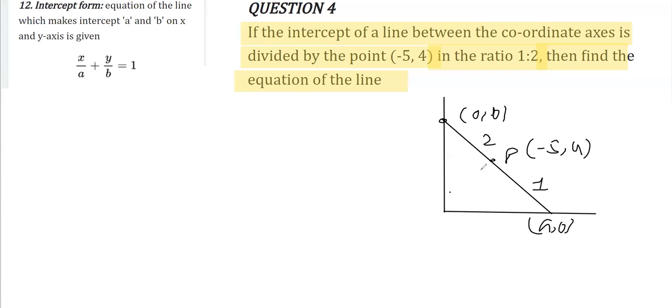For that we need the value of a and b, so we'll use the section formula: x = (m1·x2 + m2·x1)/(m1 + m2). Since we are going in this direction, I'll take this as m1 and this as m2.